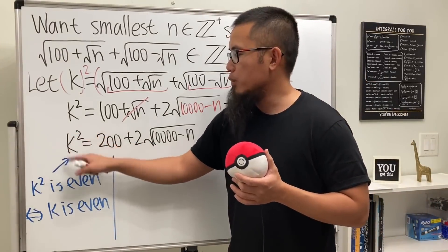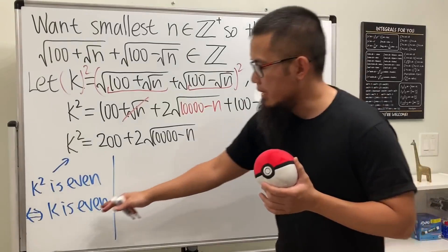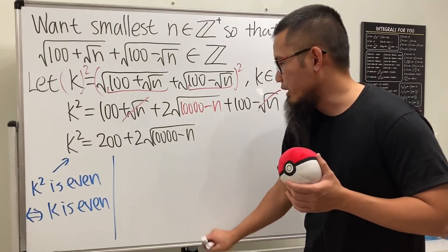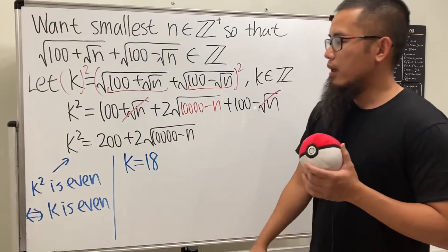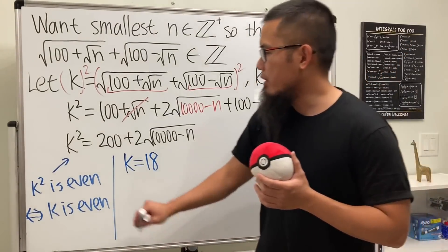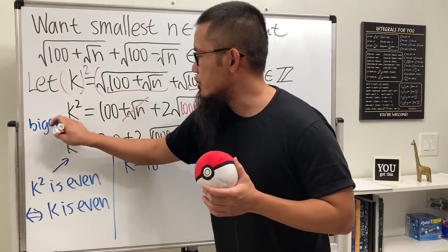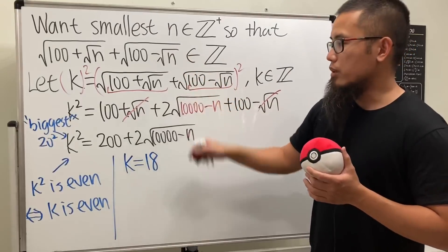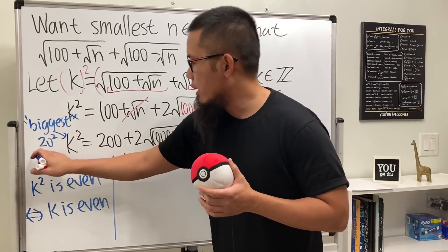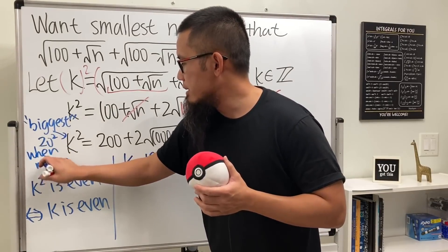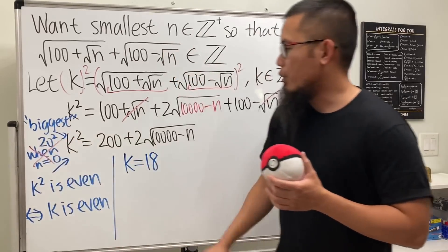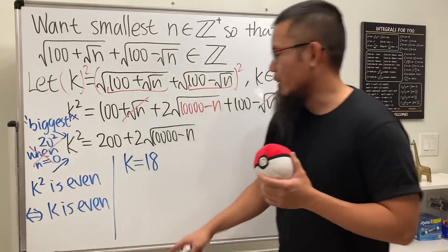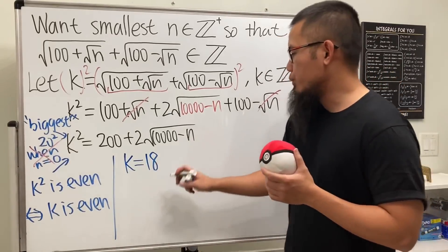Since k = 20 is not achievable (because n cannot be zero), the biggest k was 20 but it's not achievable. So we go to the next smaller even number, which is k = 18. That's our next consideration.